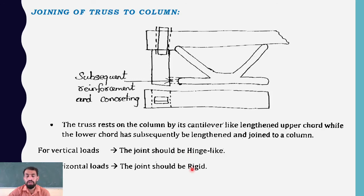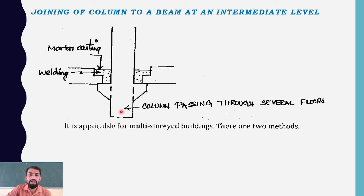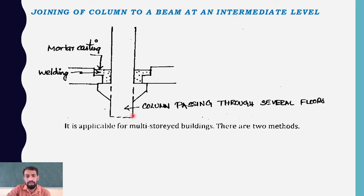Next is the joining of a column to a beam at an intermediate level — meaning in the middle of the building. The concrete column continues to the next floor, and when we need to join it at the intermediate level, we must understand how it is to be joined. The column passes through several floors, with a resting level at the beam.